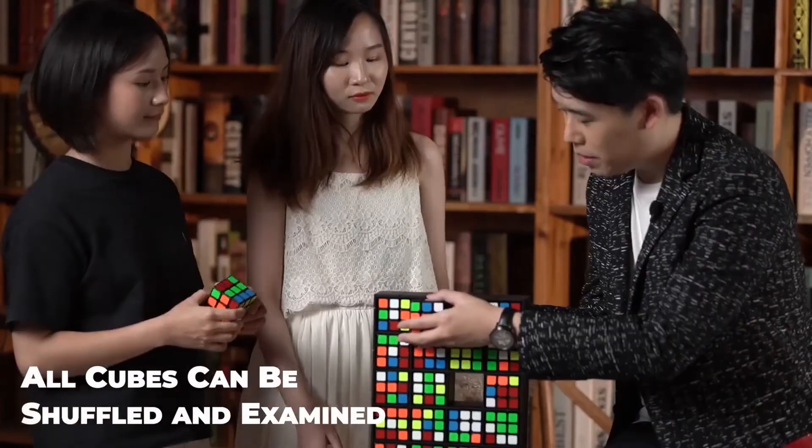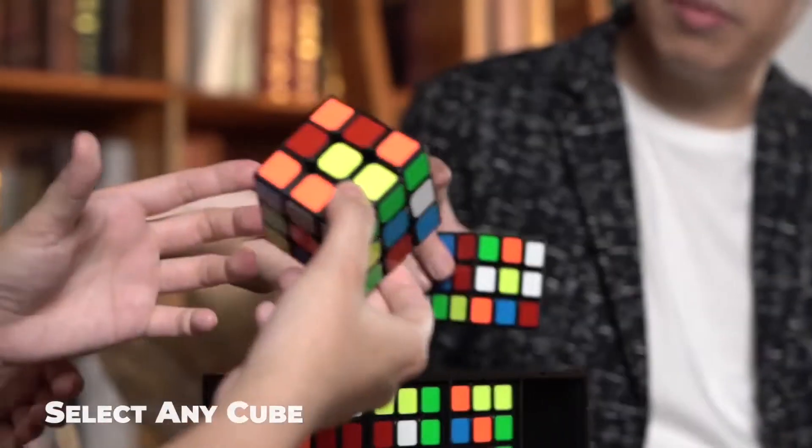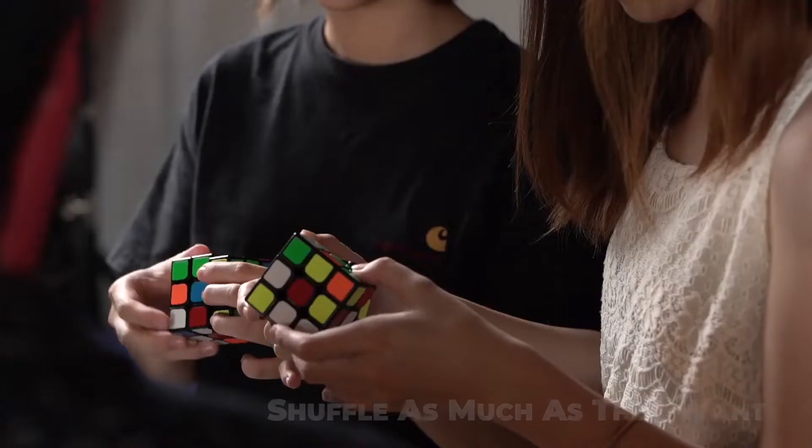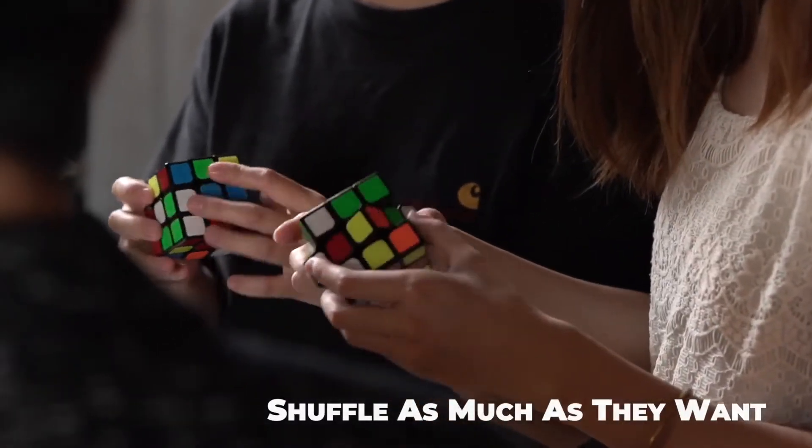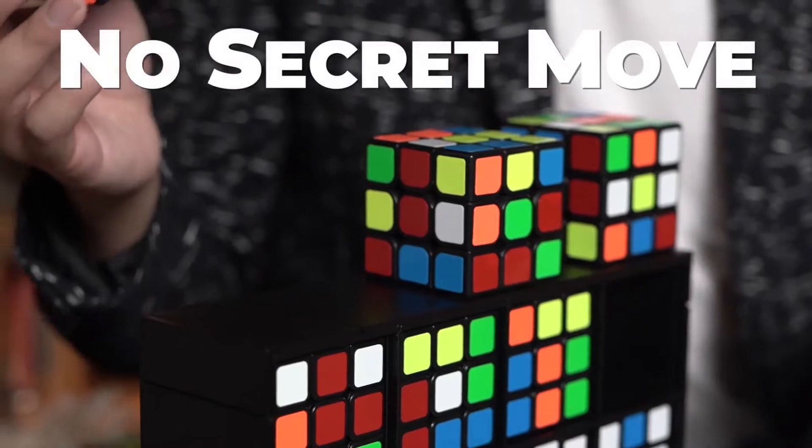All 24 cubes can be shuffled and examined. The spectator can choose any cube they like. They can shuffle as much as they want, with no secret move.